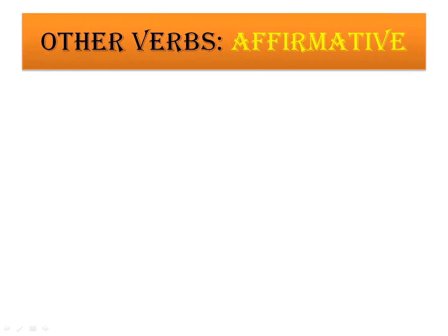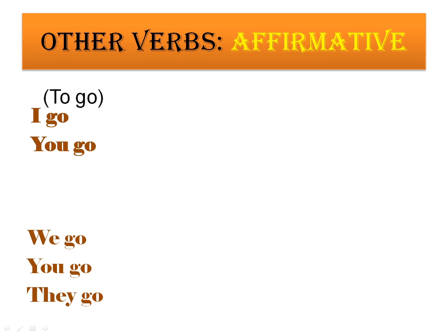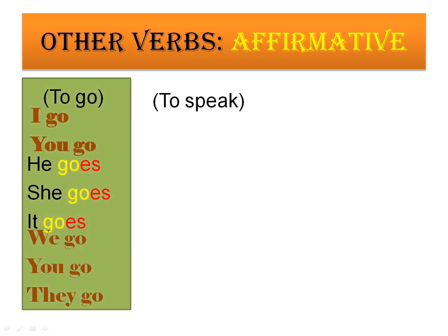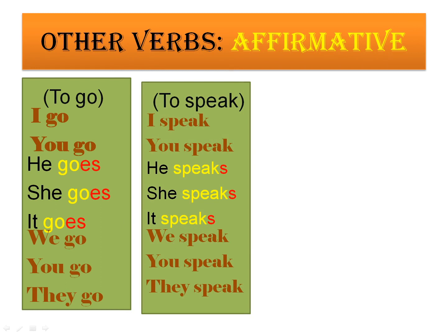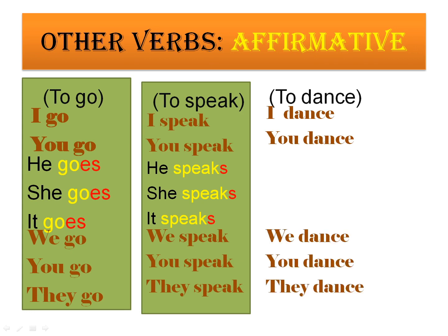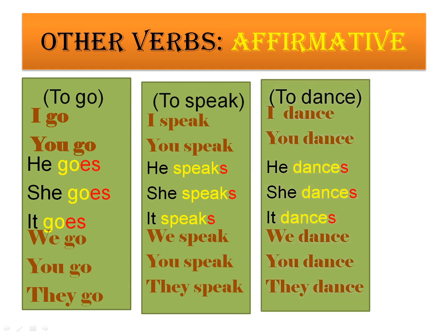Let's move now to the other verbs and notice the difference from 'to be'. In the affirmative form, take the verb 'to go': I go, you go, we, you, they go. But with he, she, it — the verb changes, it takes 'es': goes. Another verb, 'to speak': I speak, you speak, we, you, they speak. But he, she, it — it takes 'es': speaks. Another example, 'to dance': I dance, you dance, we dance. But he, she, it — it becomes 'dances', taking 'es'.